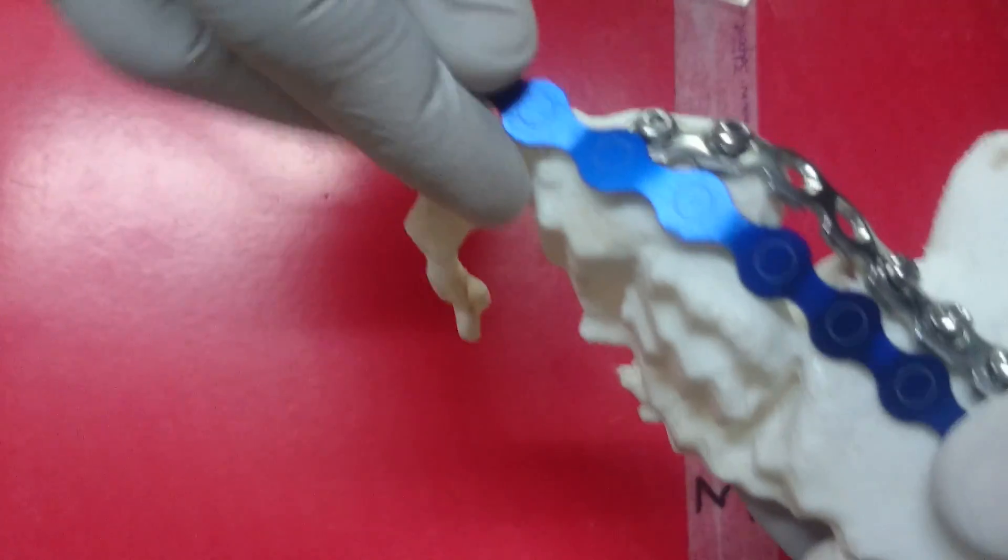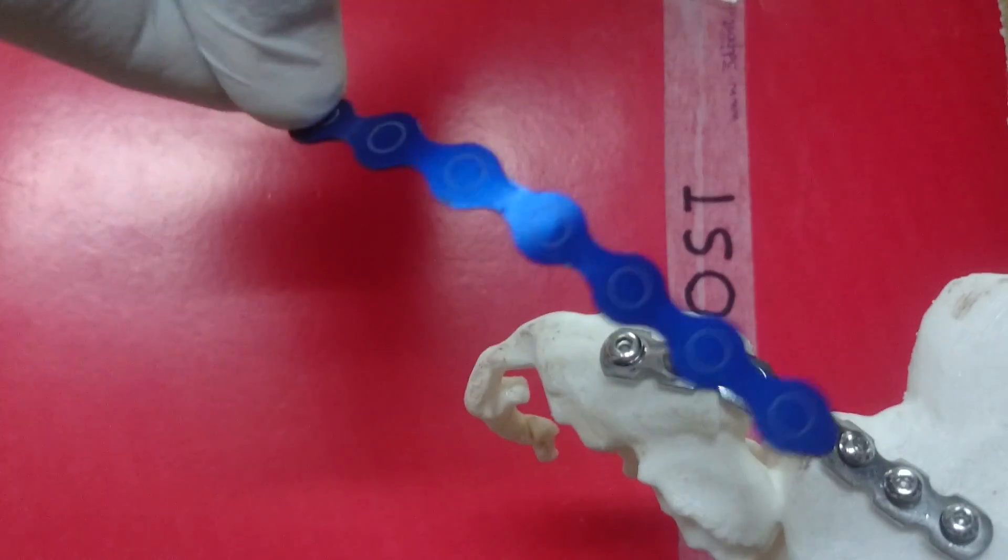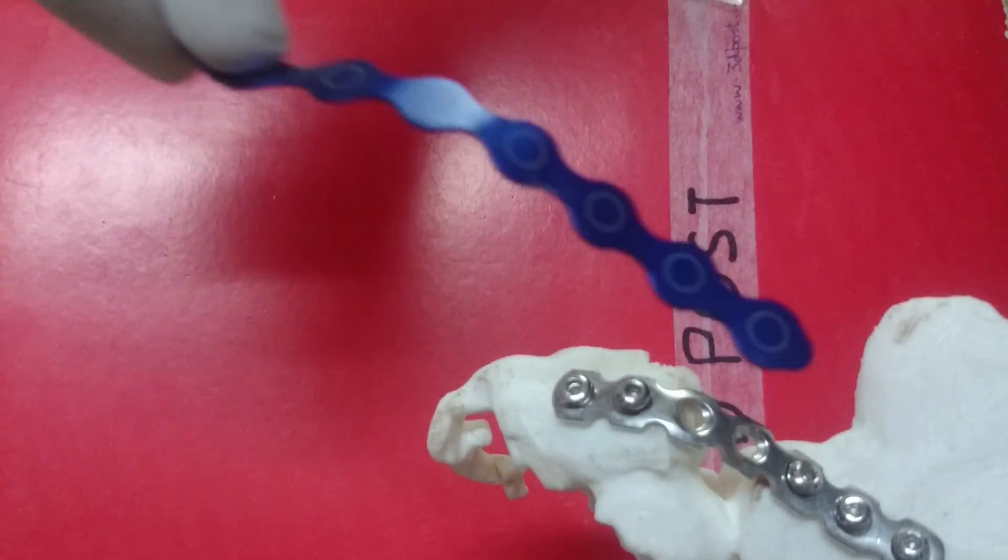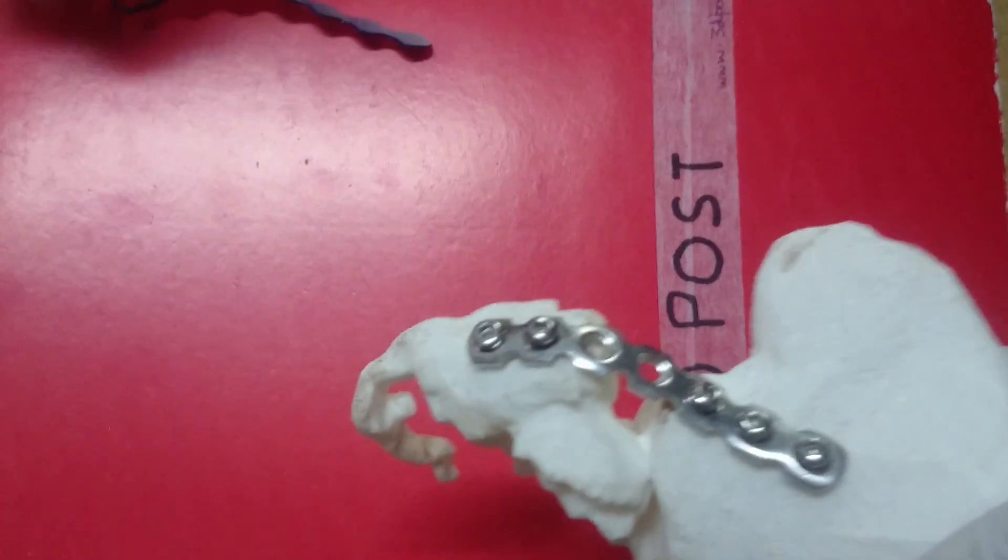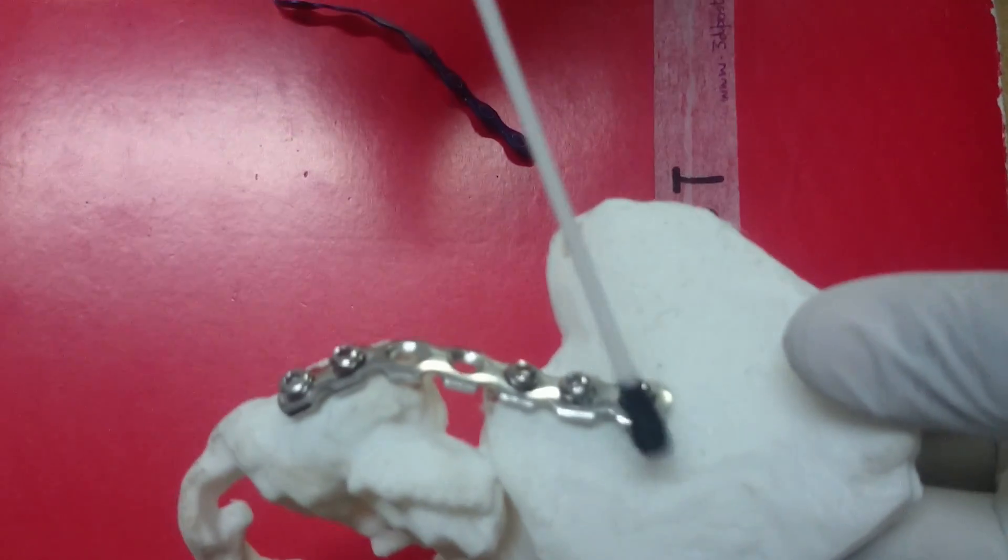The surgeon can place the template here and do a pre-contouring of his plate in this fashion. Once that is done, the actual implant can also be molded. And once that's done, the screw trajectories can be planned.